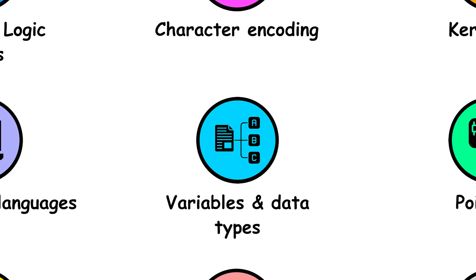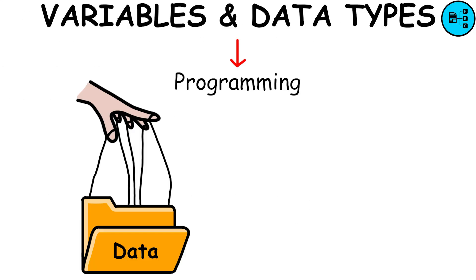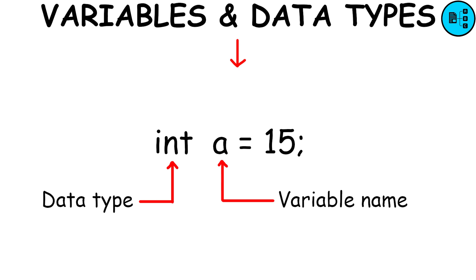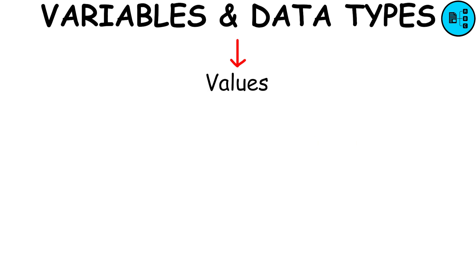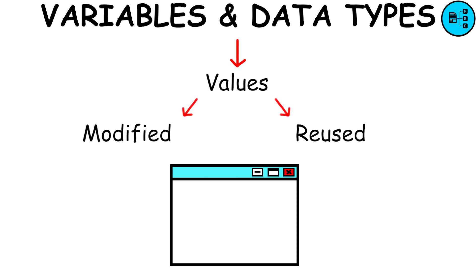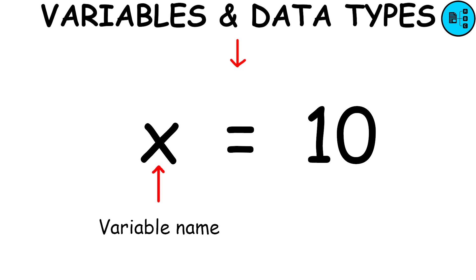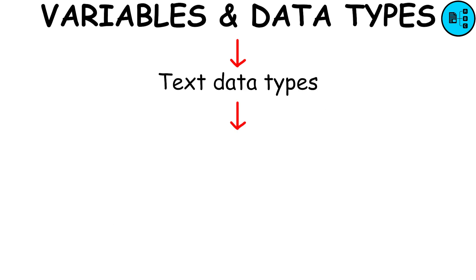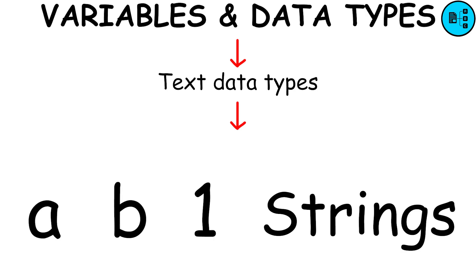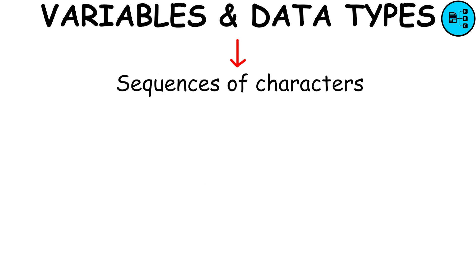In programming, data is manipulated through variables, which essentially serve as placeholders for values. These values can be modified and reused throughout the program. The type of data a variable can hold depends on its assigned value. Text data types encompass individual characters, such as A, B, or 1, and strings, which are sequences of characters like Hello World.